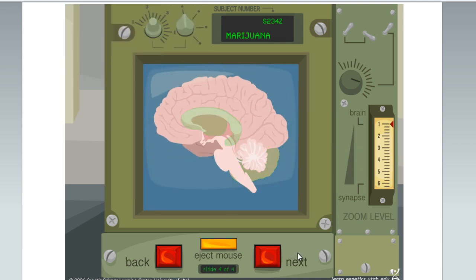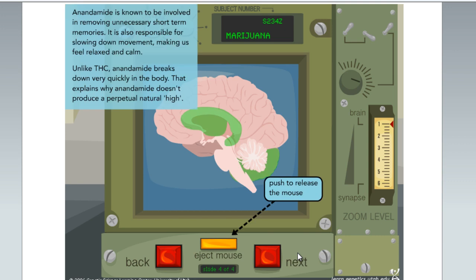Anandamide is known to be involved in removing unnecessary short-term memories. It is also responsible for slowing down movement, making us feel relaxed and calm. Unlike THC, anandamide breaks down very quickly in the body. That explains why anandamide doesn't produce a perpetual natural high.